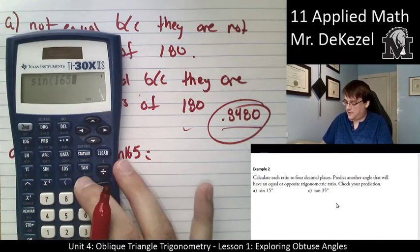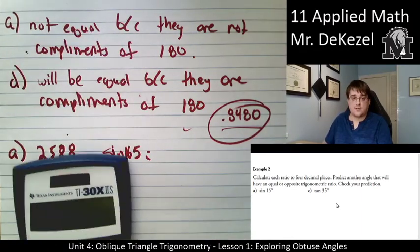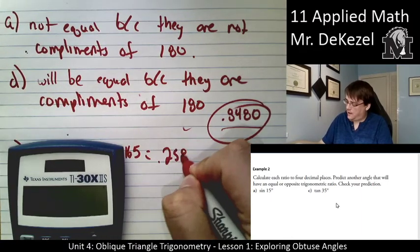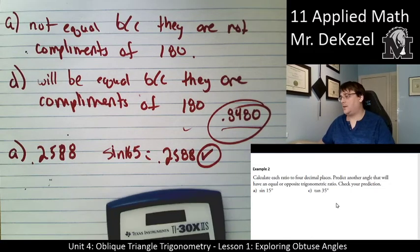Sine of 165 equals .2588. Yes, that's what we're looking for. .2588. So we did it correctly.